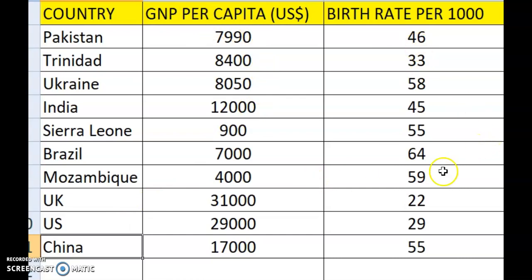We need to rank the individual parameters — both GNP per capita and birth rate per 1000. If you are ranking one parameter in ascending order, you must do the same ascending order ranking for the other parameter, and vice versa for descending order.